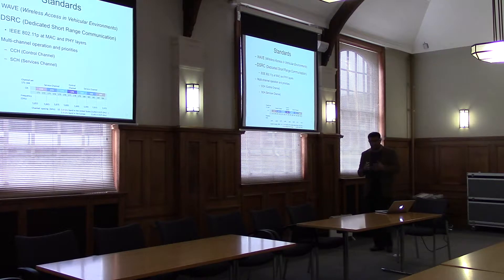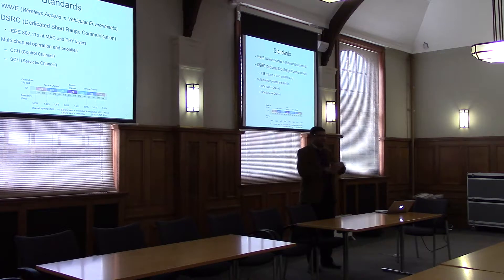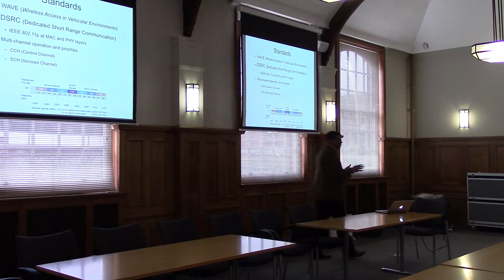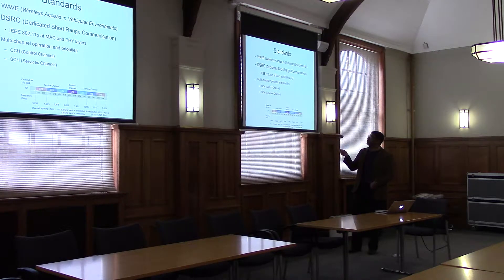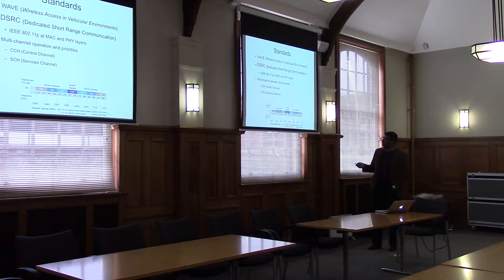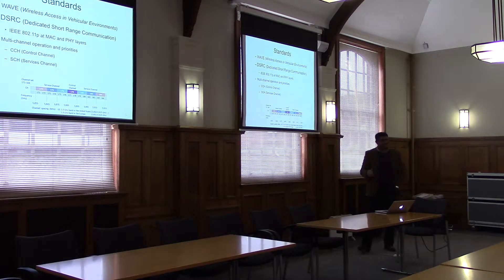Why the separation? Because beacons involve broadcasting, and if everybody broadcasts, there are collisions of packets — so we have to separate the communication into a safer mode. That's what 802.11p does. It uses a very high frequency, around 5.9 GHz. There are some differences between the United States and Europe — as with every protocol — and also Japan and Australia have different sets.